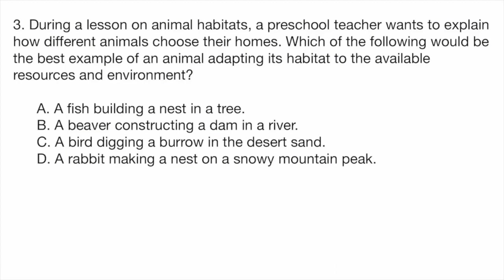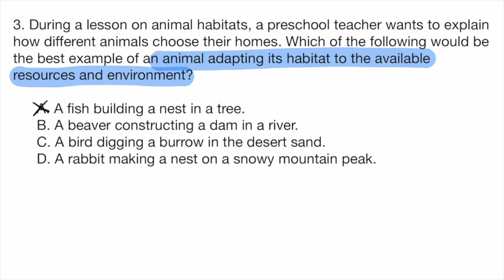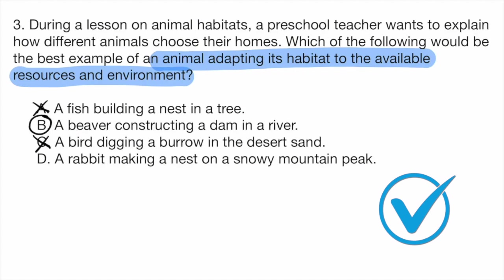We're being tested on what an animal adapting to its habitat looks like. Reading through these options, some are clearly meant to throw us off. Option A — a fish building a nest in a tree — is clearly wrong; they may have been trying to trick us into thinking of a bird building a nest in a tree, which would have been a good answer. Option C, a bird digging a burrow in the desert sand, also places the animal out of its natural habitat. Between B and D, option B is the best answer: a beaver constructing a dam in a river, using available sticks and materials to build its home, is a clear example of adapting its habitat to available resources.